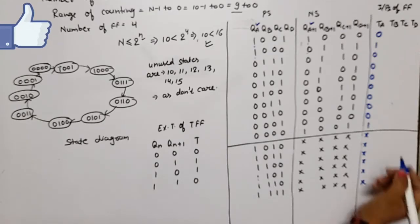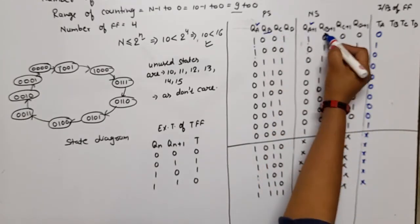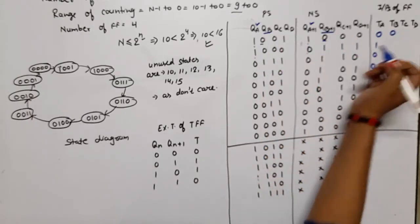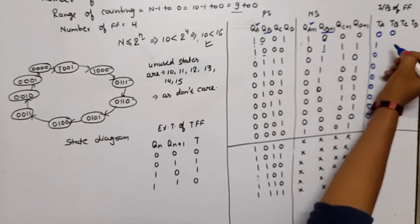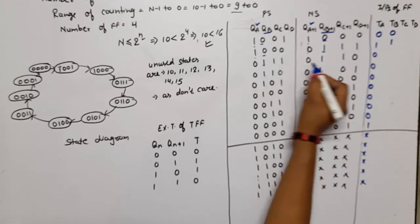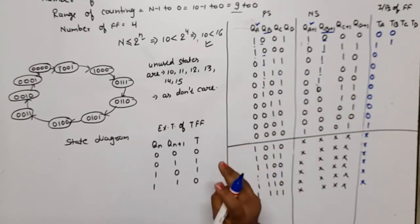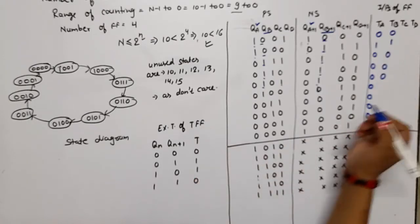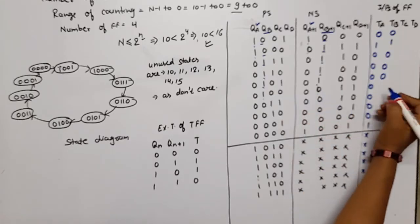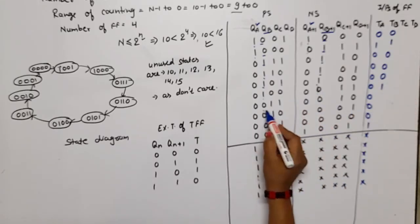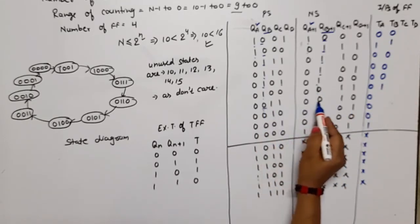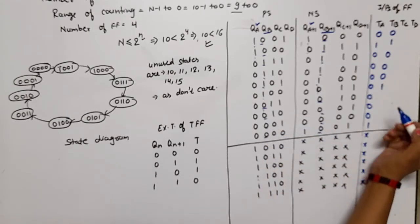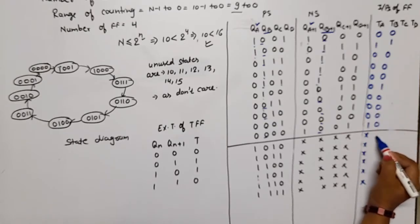For TB, we observe QB and QB+1. From 9 to 8: 0 to 0 — no change, TB = 0. From 8 to 7: 0 to 1 — change, TB = 1. States 7 to 6, 6 to 5, 5 to 4: QB stays 1 to 1 — no change, TB = 0 for those three cases. From 4 to 3: 1 to 0 — change, TB = 1. Then from 3 down to 0 QB does not change, TB = 0. Don't care for unused states.